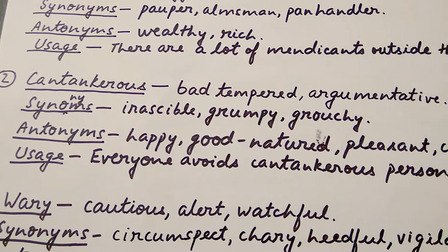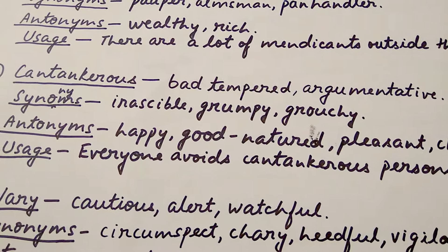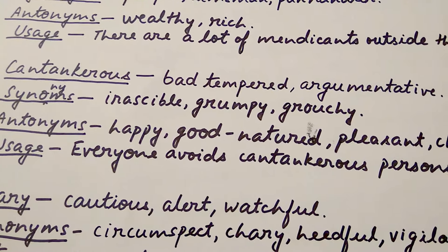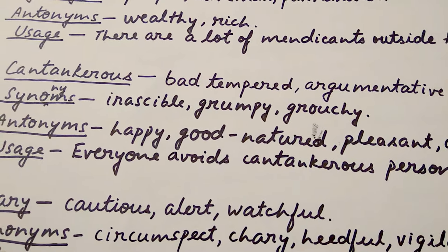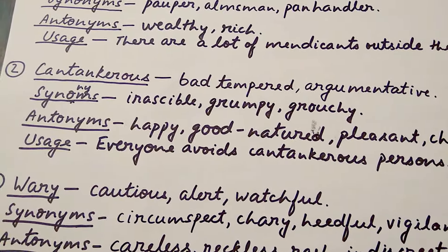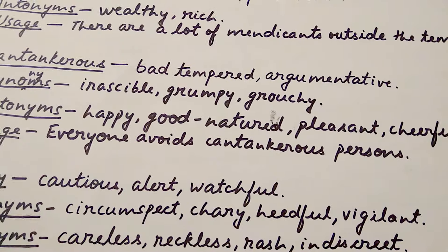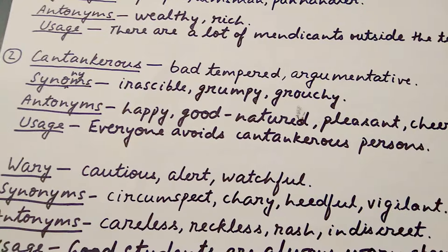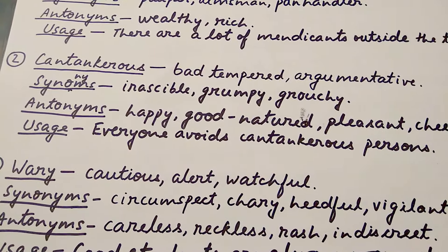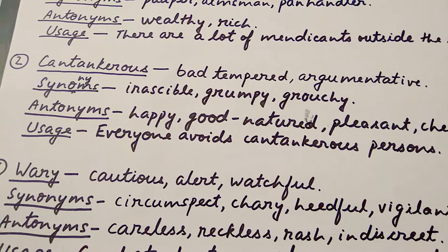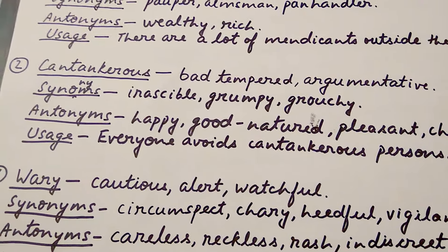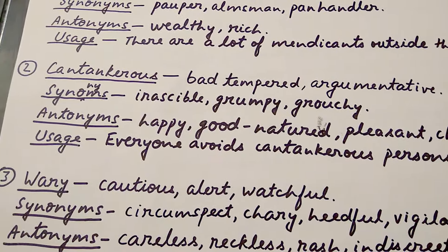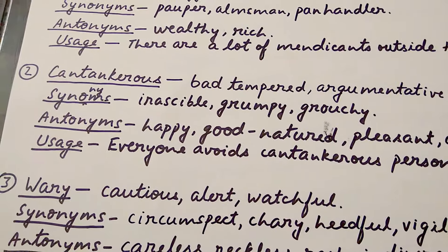The next word is 'cantankerous', which means bad-tempered or argumentative. Its synonyms are 'irascible', 'grumpy', and 'grouchy'. Its antonyms are 'happy', 'good-natured', 'pleasant', and 'cheerful'. Usage in a sentence: 'Everyone avoids a cantankerous person' — people who are cantankerous are normally avoided by everyone.